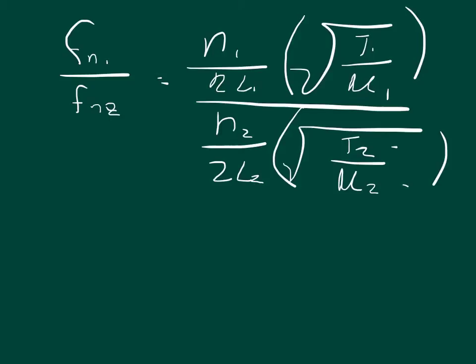But I know that the equation says that basically these are going to stay the same. So I can cancel this out. And then it doesn't say anything about the length changing either, so we can cancel this out.